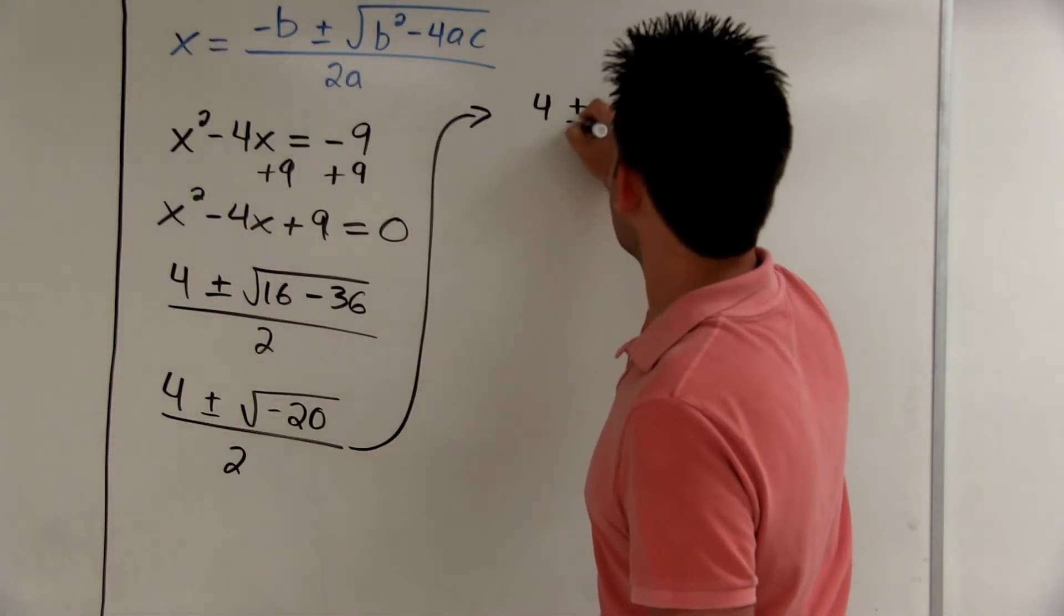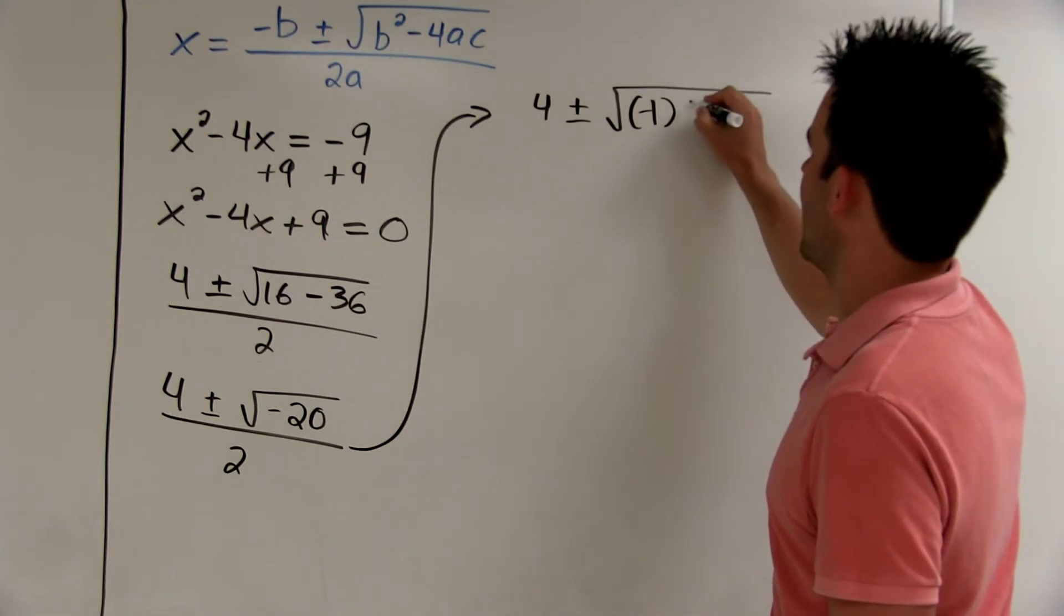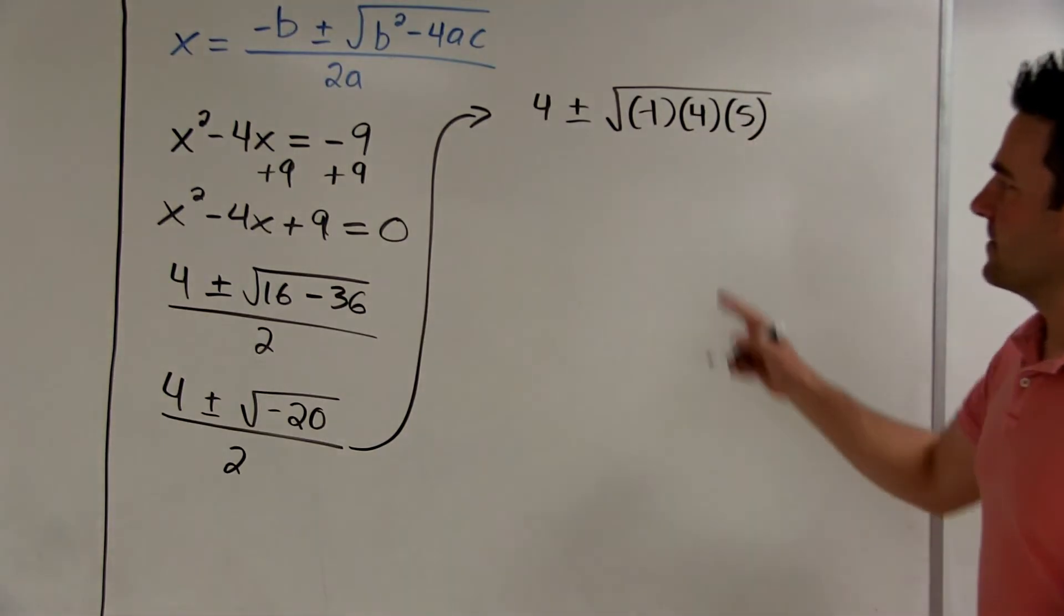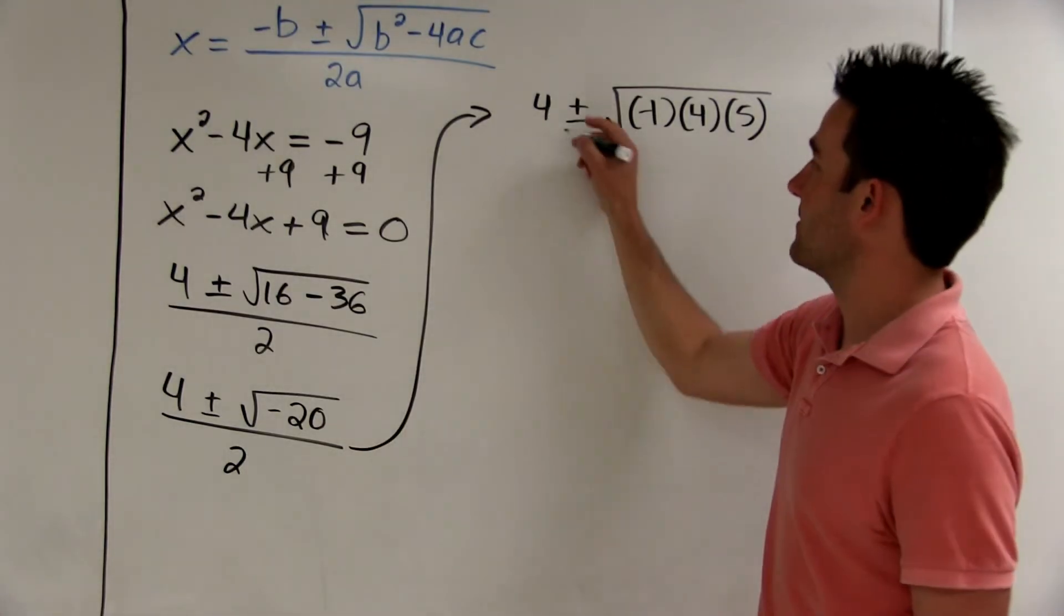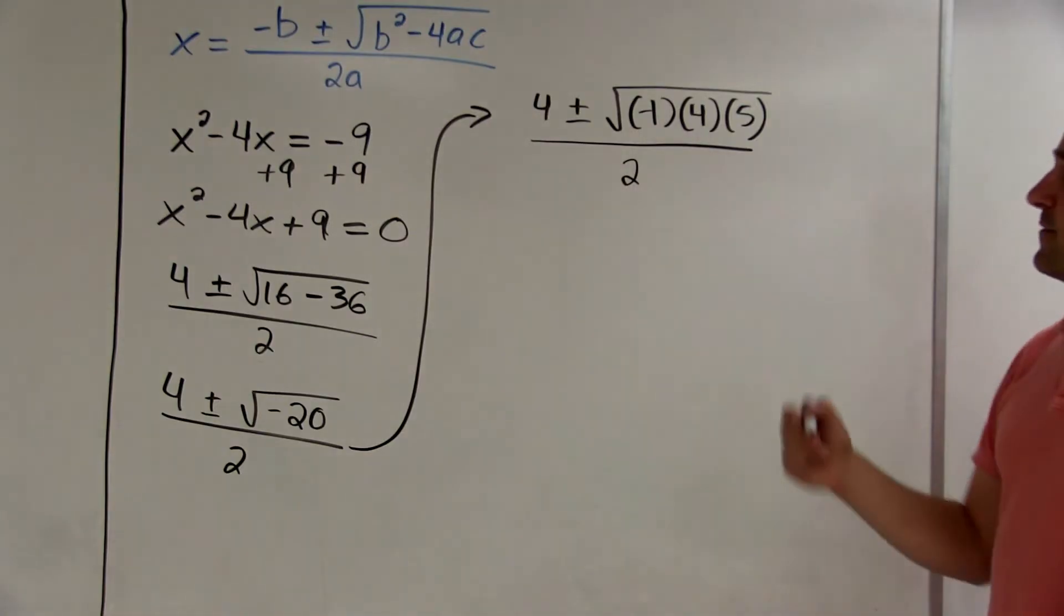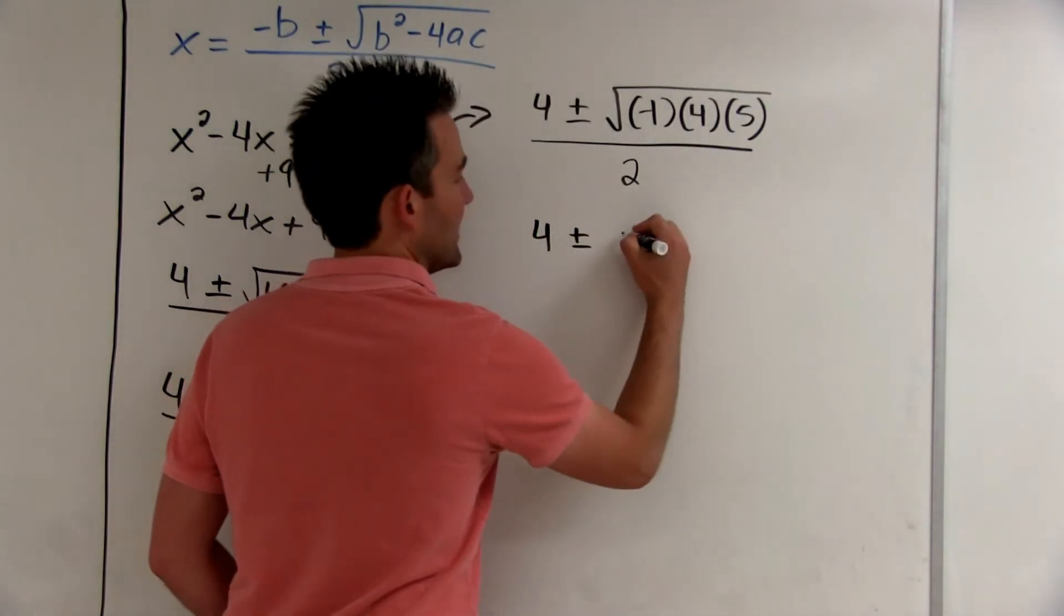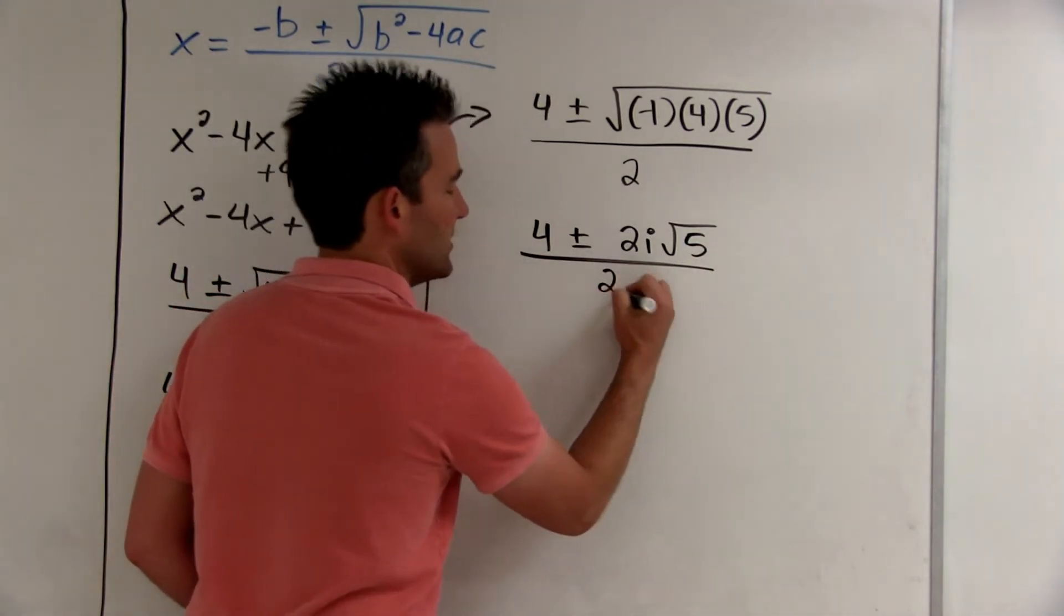4 plus or minus. I'm actually going to write the square root as negative 1 times 4 times 5. These three numbers, negative 1, 4, and 5, multiply to be a negative 20. But what's the square root of negative 1? i. And what's the square root of 4? 2. So you could rewrite this as 4 plus or minus 2i rad 5, all over 2.